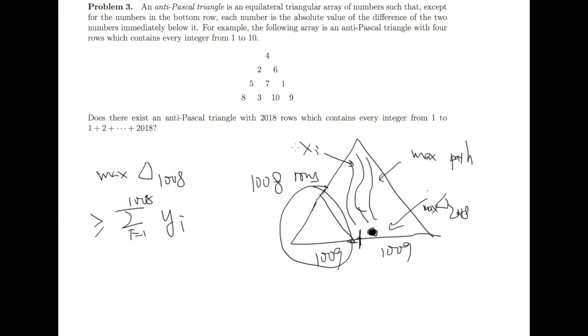Now we know that each of 1, 2, 3, 4, 5 to 2018 is already in x_i, so they don't intersect with this triangle. This means the max of delta_1008 is larger than 2019 plus 2020 plus until there are 1008 elements.